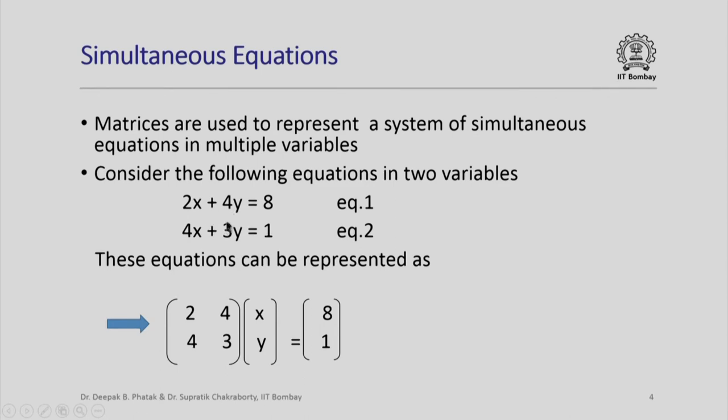To begin with, we look at how we can represent these two equations by using a matrix. Suppose we choose to put the coefficients of x and y in both these equations in a matrix in this fashion. The first row represents the coefficients of x and y in the first equation, second row represents the coefficients in the second equation. We then write a vector or one dimensional array x and y, and this is equal to the right hand side which happens to be 8 and 1. In fact, those of you who recall the matrix operations will know that this effectively means 2 multiplied by x plus 4 multiplied by y equal to 8, and 4 multiplied by x plus 3 multiplied by y equal to 1.